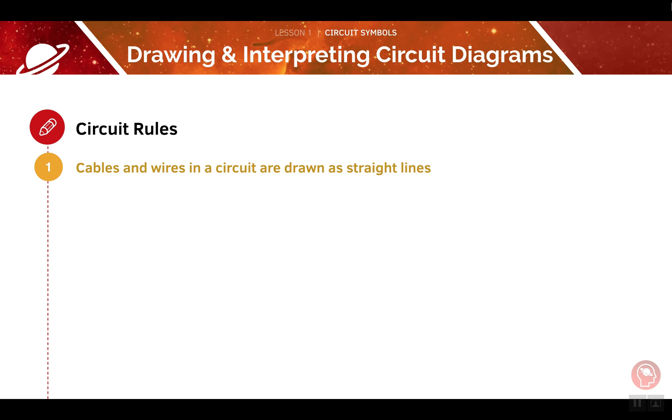When drawing circuit diagrams, there are a few important rules you need to remember. First, always draw cables and wires as straight lines. The wires should never cross over one another. Make sure you use the correct symbols for each part of the circuit. You can make things easier for yourself by learning the list of symbols we showed earlier in the video.